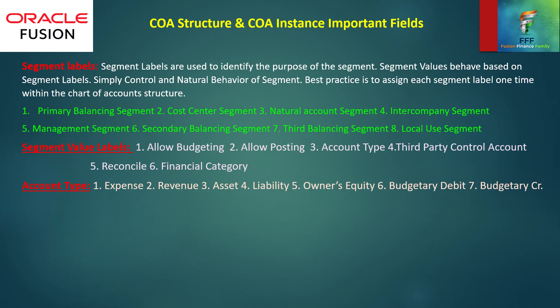Next, segment labels. Segment labels are used to identify the purpose of the segment. Segment values behave based on the segment labels — they simply control the natural behavior of a segment. Best practice is to assign each segment label one time within the chart of accounts structure. Segment labels are: primary balancing segment, cost center segment, natural account segment, intercompany segment, management segment, secondary balancing segment,